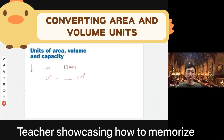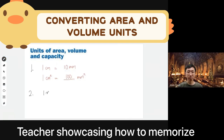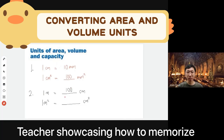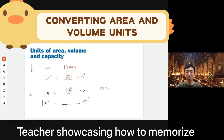For area conversions, the square symbol means the unit multiplies itself two times. So 1 cm² means 10 mm × 10 mm = 100 mm². For 1 m² in cm²: since 1 meter = 100 cm, you take 100 × 100. That gives you 10,000 cm² — count the zeros: one, two, three, four — ten thousand.